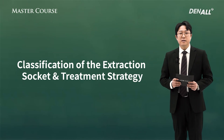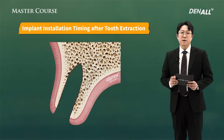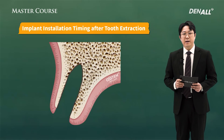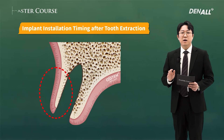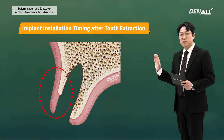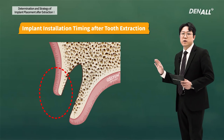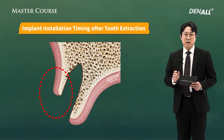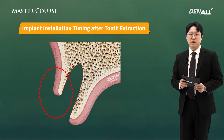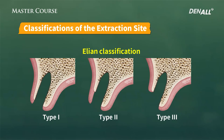Next, I'm going to talk about treatment strategy depending on the socket shape. I talked about the four categories of placement period, and now I'm going to talk about how they're affected by extraction socket shape. In the case where the extraction socket is sound, if there is just bone resorption, and when there is also soft tissue resorption, depending on which condition is present, there is a difference in treatment strategy. So you need to know the classification of the extraction socket and build your implant treatment plan accordingly. I'm going to talk about Ilya's classifications.